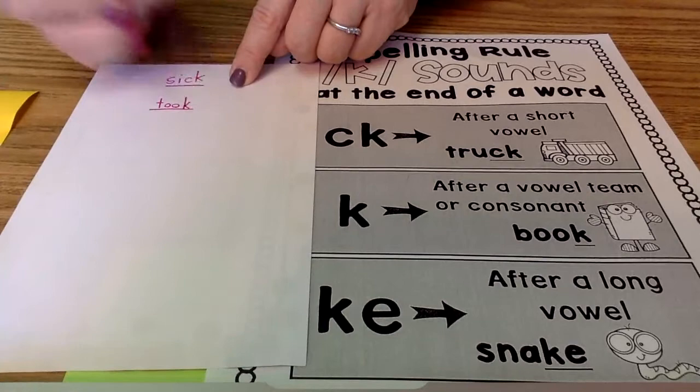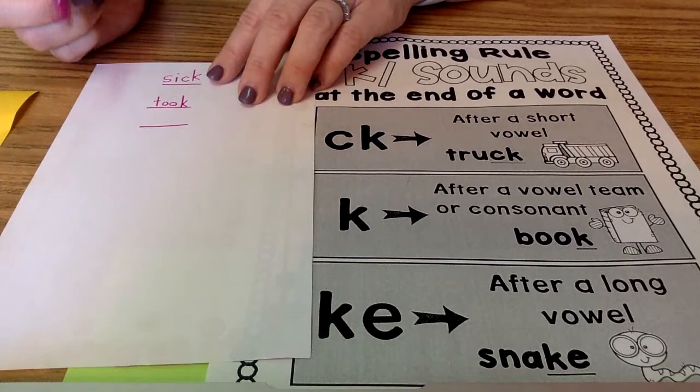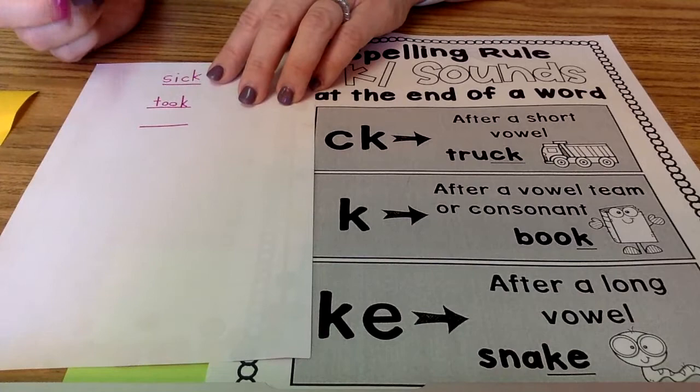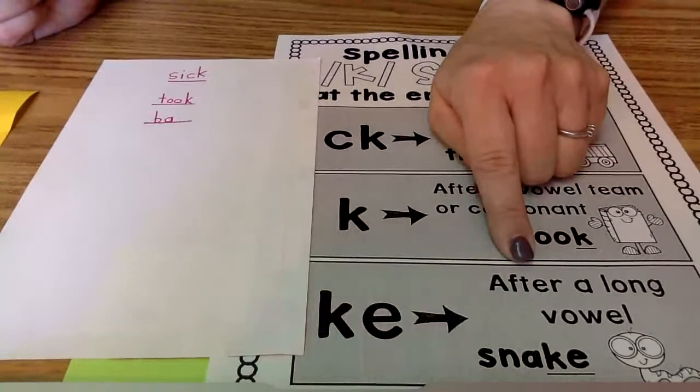Okay, my next word is bake. B, A. All right, how am I going to make that A say its name? K-E. Sneaky E. Bake.